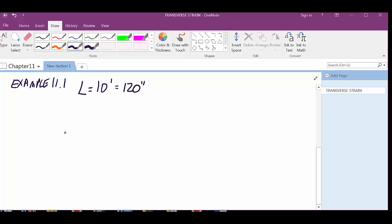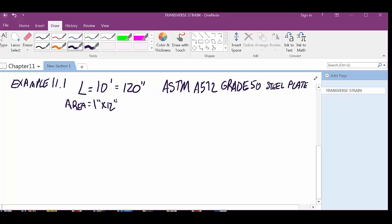What else do we know? It's ASTM A572 grade 50 steel plate, and we know that the area is one inch by 12 inches, or 12 square inches, right? In case we need that. Subjected to a tensile load, so that, in the last thing we called that P, right? 240,000 pounds.